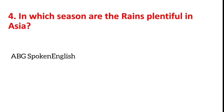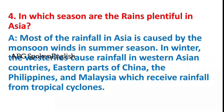In which season are the rains plentiful in Asia? Most of the rain in Asia is caused by the monsoon winds in the summer season. In winter, the westerlies cause rain in western Asian countries. The eastern part of China, the Philippines, and Malaysia receive rain from tropical cyclones.